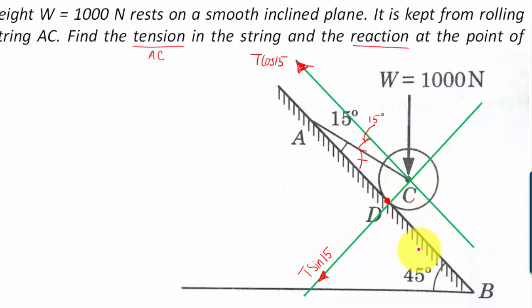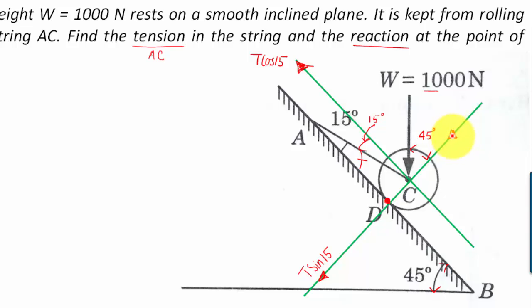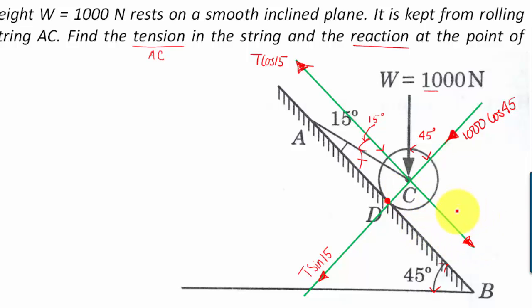The angle of the inclined plane here is 45 degrees. So the 1000 Newton force acting downward also has two components. Since this angle is 45 degrees, this angle here also works out as 45 degrees. One component along the plane direction is 1000 cos 45, and the other component perpendicular to it is 1000 sin 45.